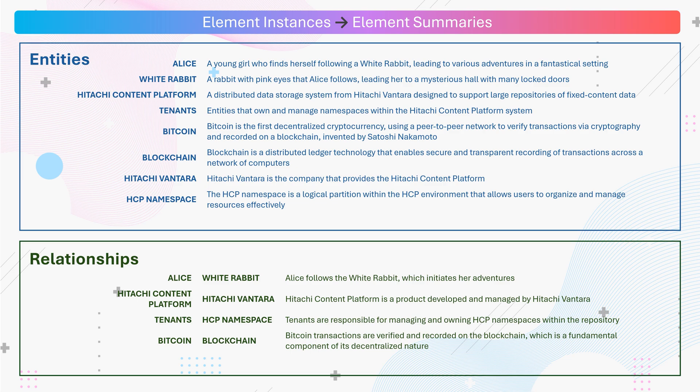In the previous step, entities and relationships were identified from each of the text chunks. But when we think about the document as a whole, some entities may occur multiple times in the document. Such entities and their relationships may be identified multiple times with new information. In this step, such element instances are summarized or condensed into a single node corresponding to that entity to avoid duplications while creating the knowledge graph.